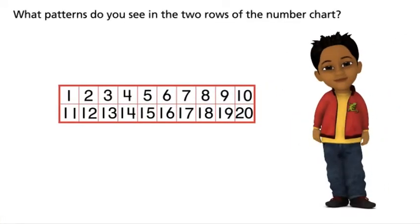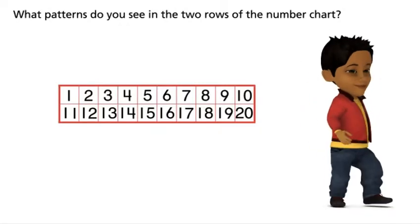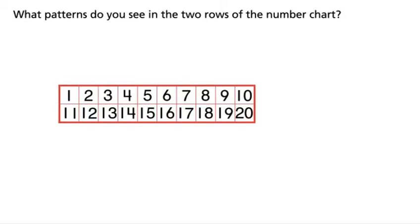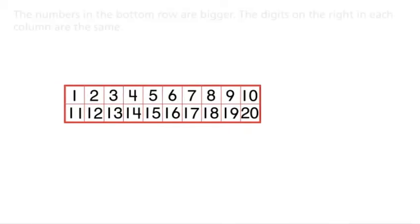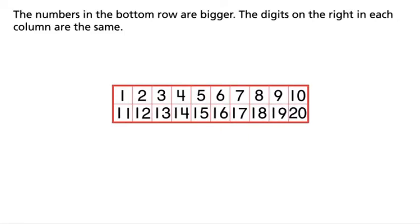What patterns do you see in the two rows of the number chart? The numbers in the bottom row are bigger. The digits on the right in each column are the same.